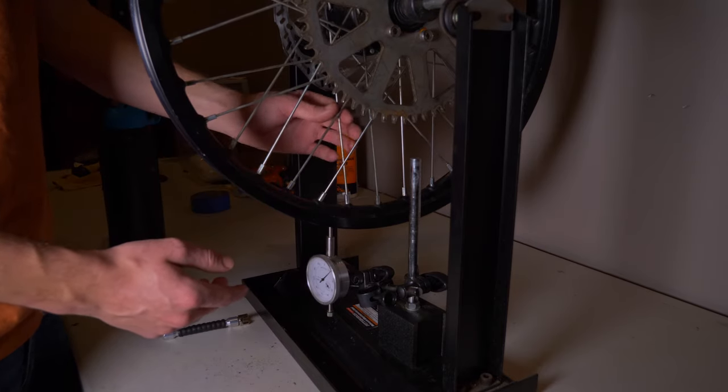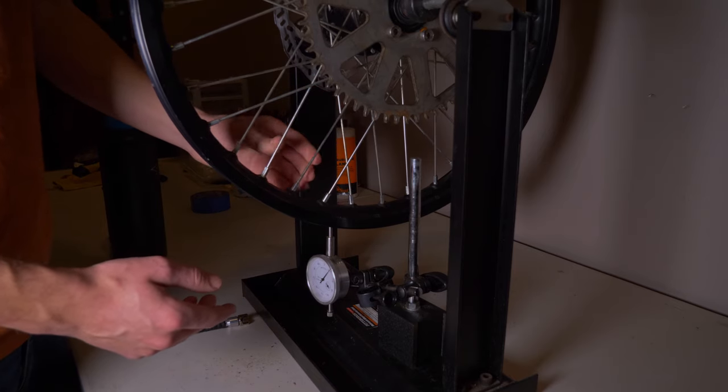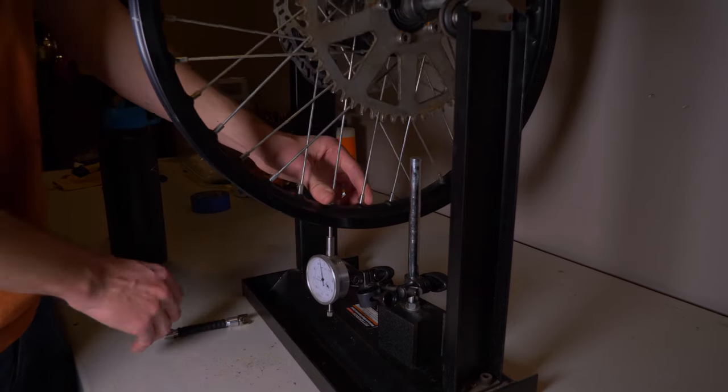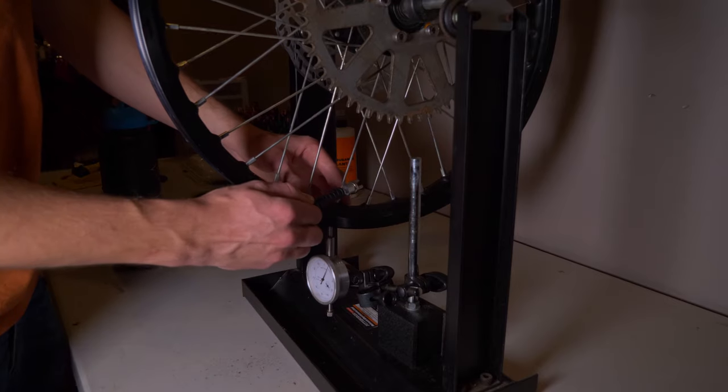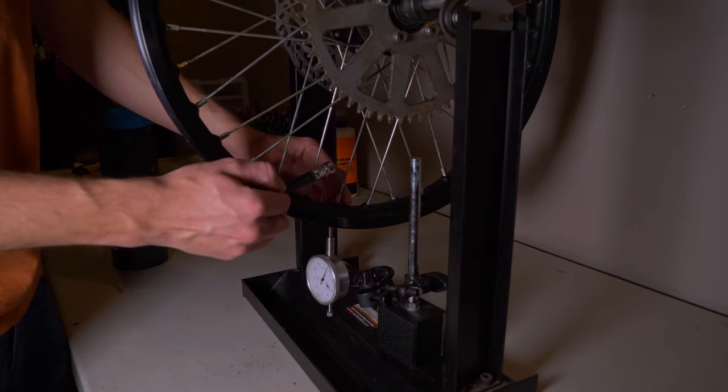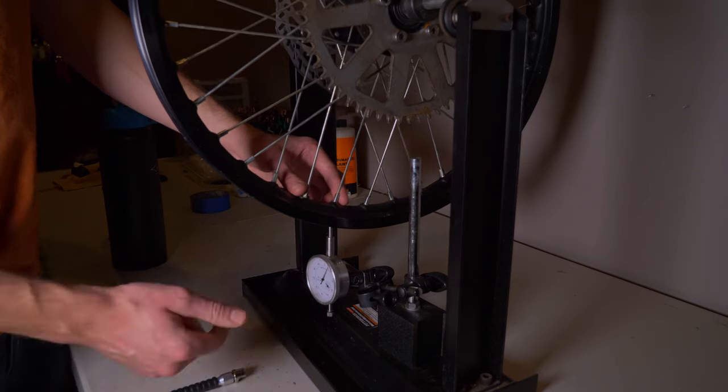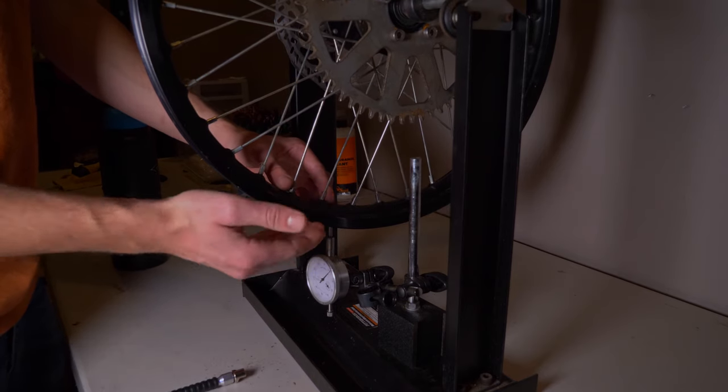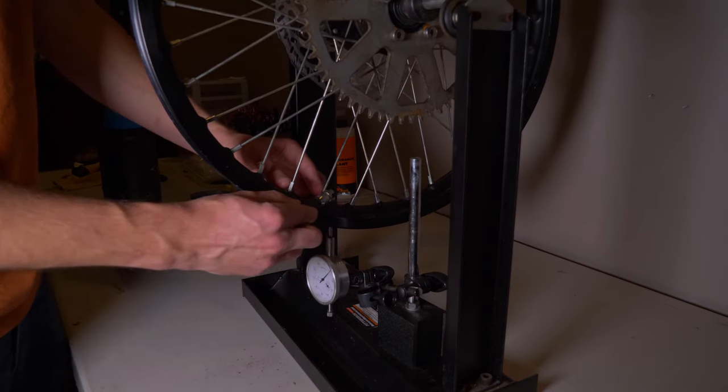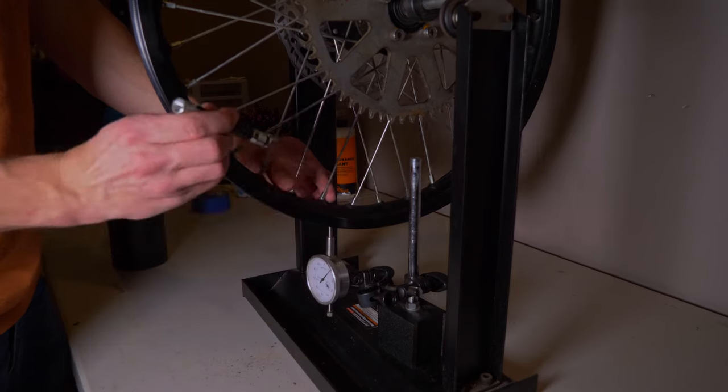If you already have that dialed in, and you just want to go up or down, instead of dealing with the pairs that go to the same side, you want to tighten in pairs that go to opposite sides. So this one here goes to the disc brake side and this one here goes to the sprocket side. So if I wanted to bring this up right here, I would tighten these the exact same amount.